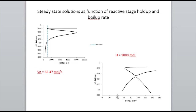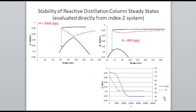More interestingly, if we fix the holdup but instead allow the boil-up to change, the family of steady states now becomes separated — it's not a connected path. The interpretation is that in a real-life column you could fall from the upper steady state.